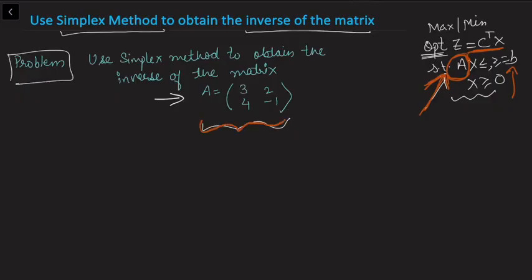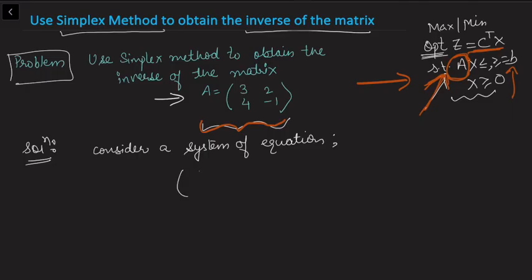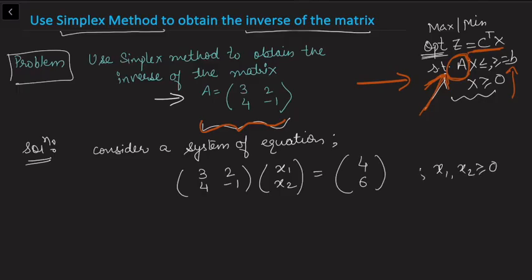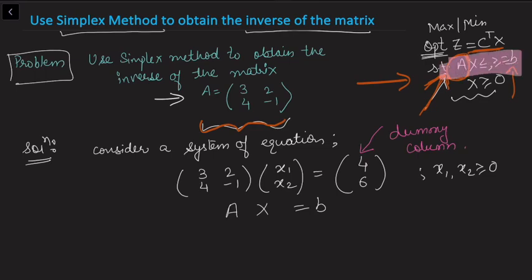So what I'm going to do is convert matrix A into a linear programming problem. I'll associate a dummy right-hand side and consider a system of equations with this given matrix A, introducing decision variables ourselves along with something on the right-hand side. The decision variables are non-negative, and this right-hand side is a dummy column — so you can keep any values here instead of 4 and 6. This allows us to form a system Ax = b so that we can apply the simplex method.